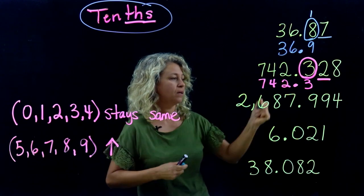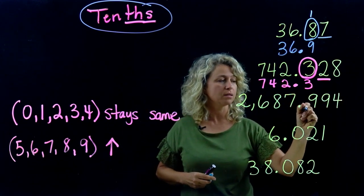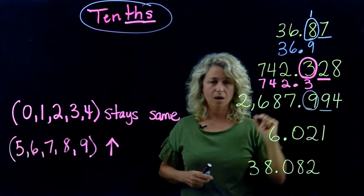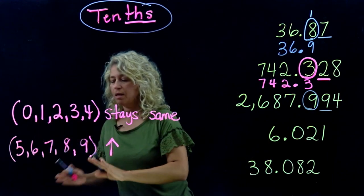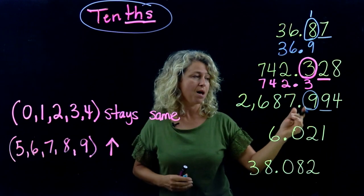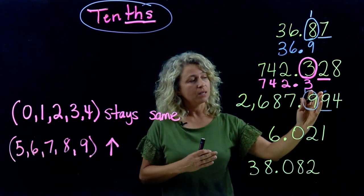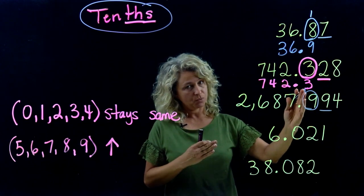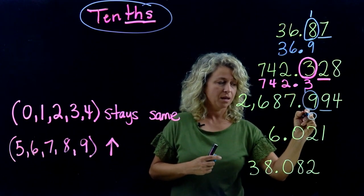Rounding to the tenths place, underline to the right. Take a look. Nine lets you know that this tenths place will round up. This is a unique situation. The nine lets you know it's rounding up. Nine plus one is ten, and your one carries over to the ones place. Seven plus one is eight.